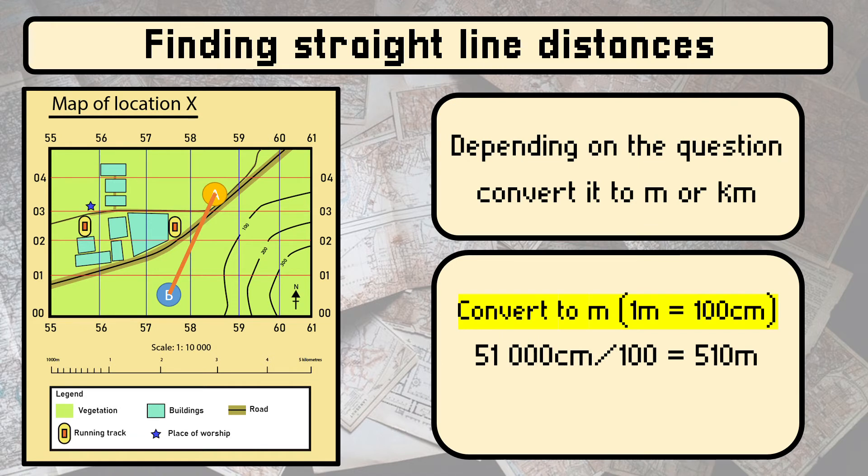Let me teach you how to convert it to meters and kilometers. We know that 1 meter equals 100 cm, and what we got just now was 51,000 cm. For us to get meters, we need to take 51,000 cm and divide it by 100 to get 510 meters.